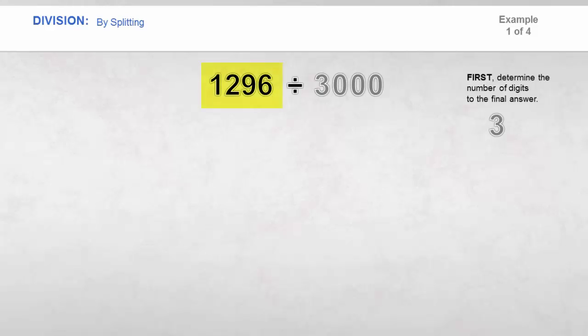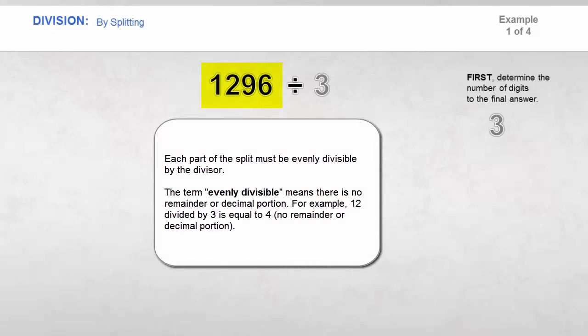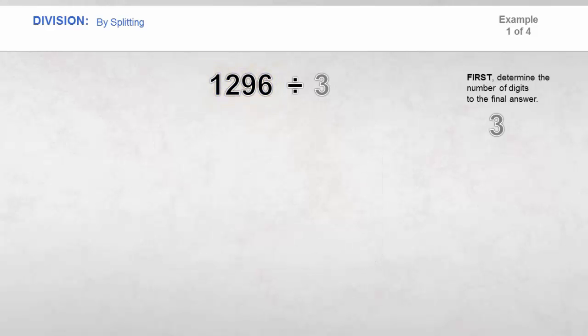We need to separate this number where each part is divisible by 3. Try to use as few parts as possible. So in this example, let's split the number 1296 into two parts of 12 and 96. Then starting on the left, divide each part by 3.